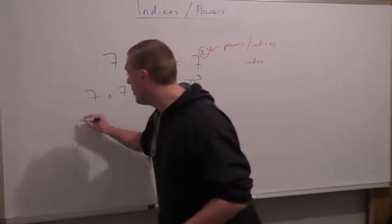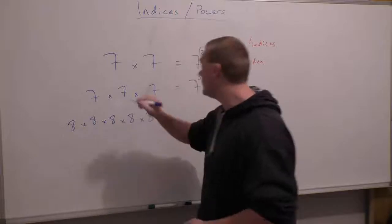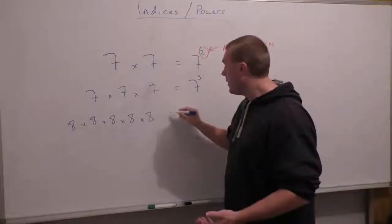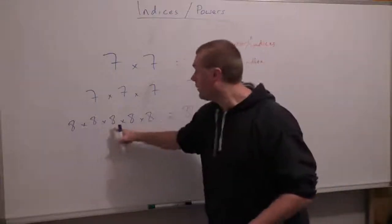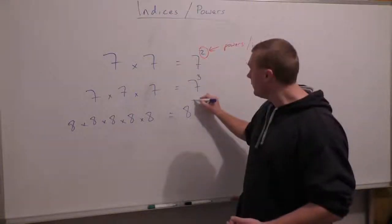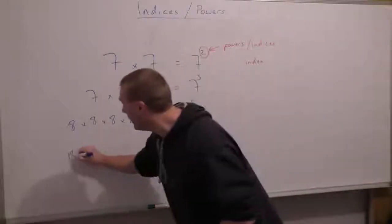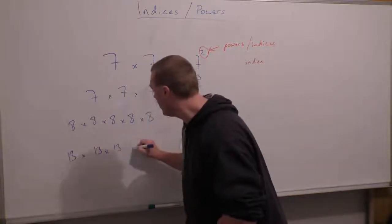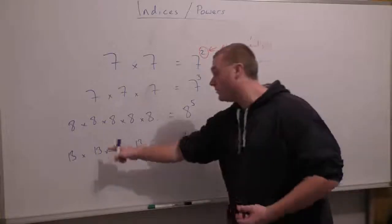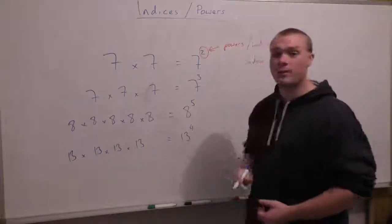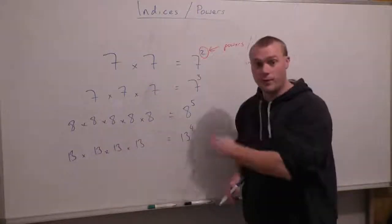And it works with anything. If we've got 8 times 8 times 8 times 8 times 8, which is going to be a really big number, we can write that as 8 to a power. Counting the 8s gives us 8 to the power of 5. And it works with any number. We can have 13 times 13 times 13 times 13, and that would just be 13 to the power of 4. And that's how we can make it simple — how to get from repeated multiplication to a power really easily.